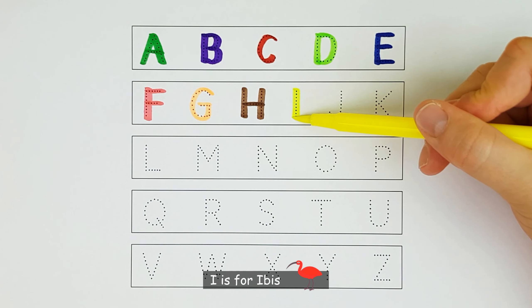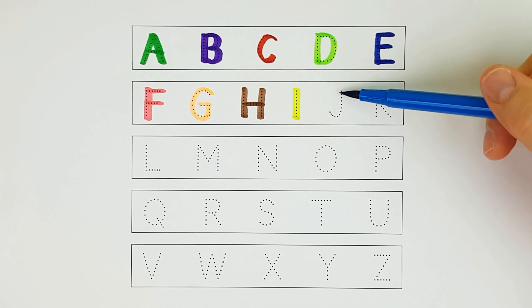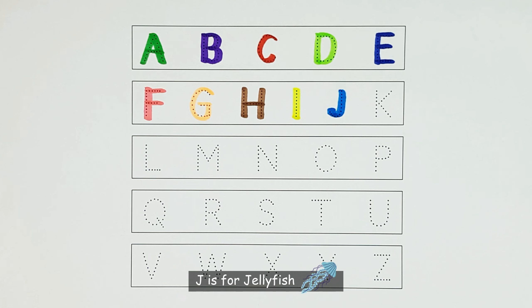I. I is for Ibis. I. J. J is for Jellyfish. J.